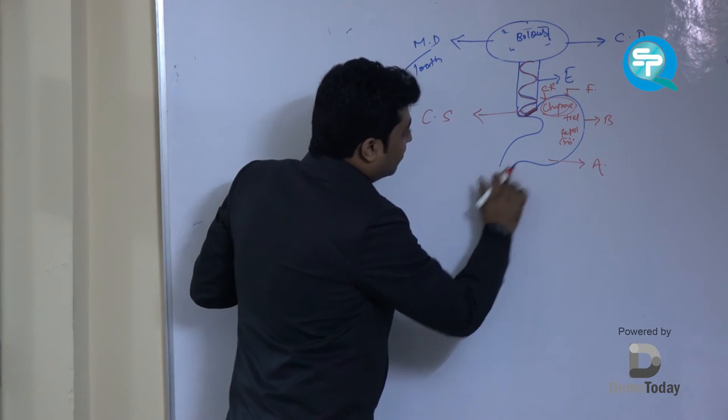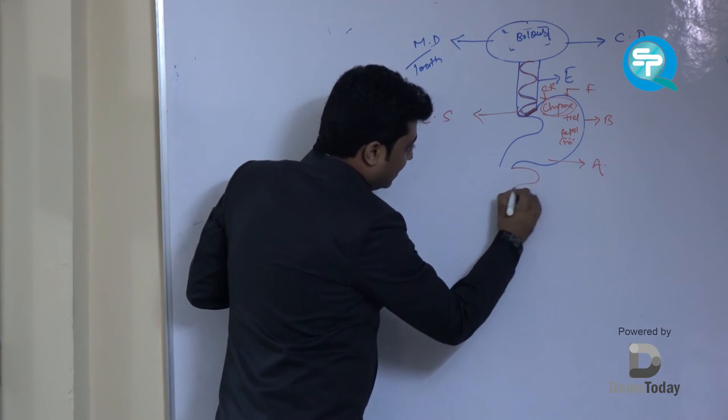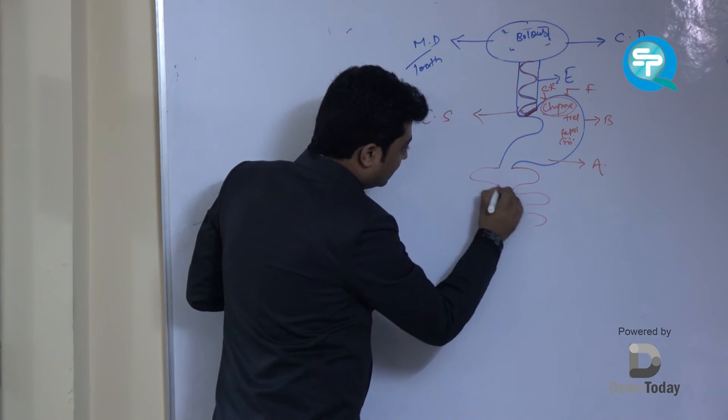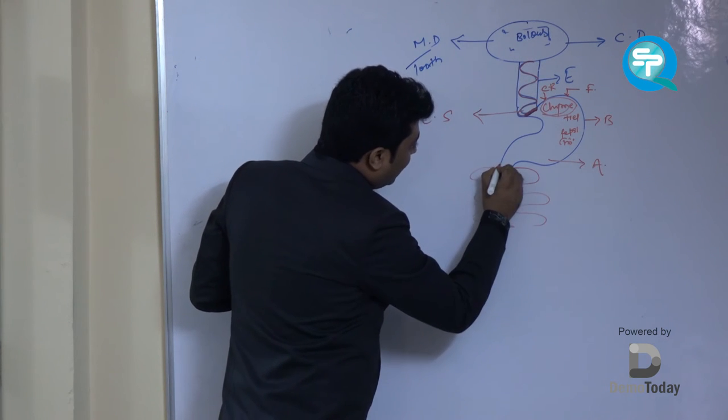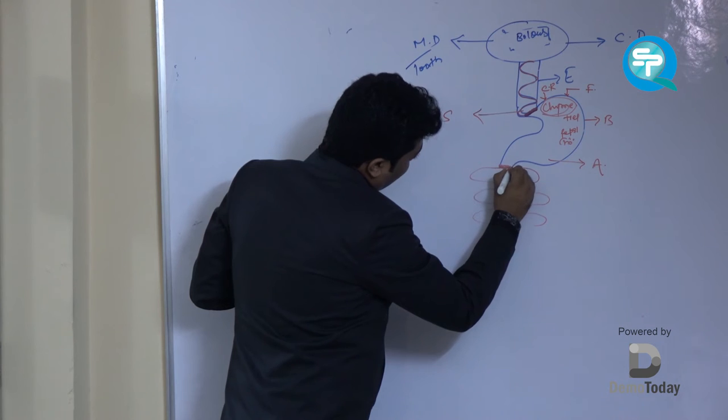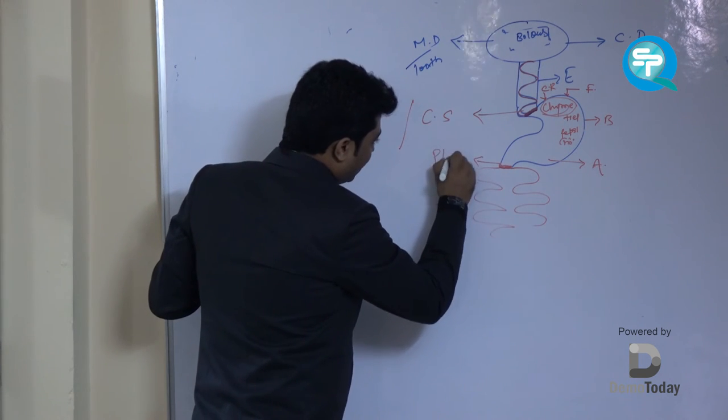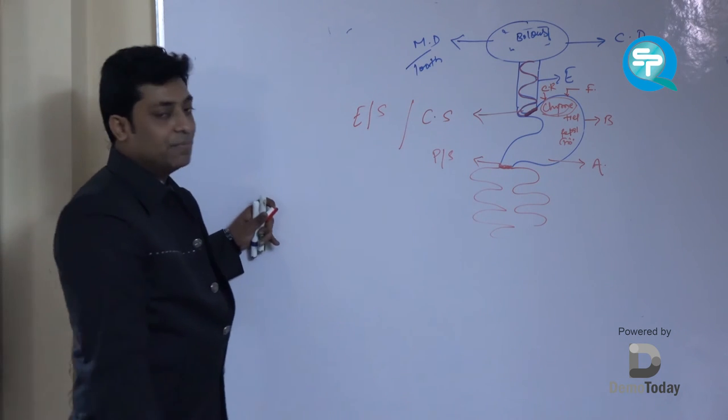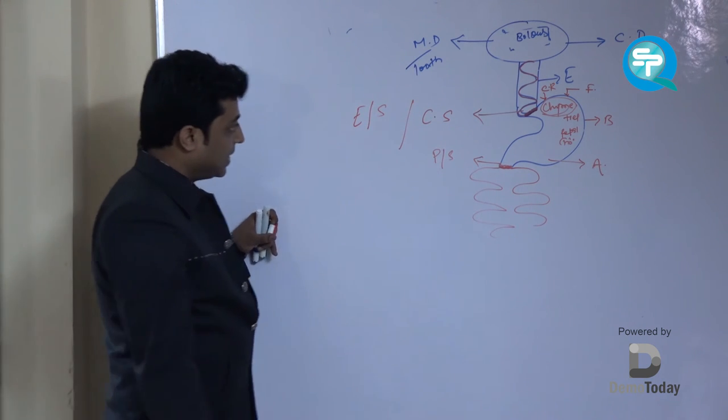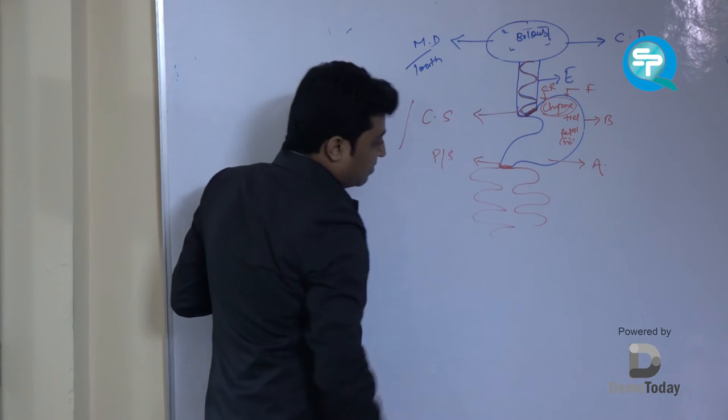Now this chyme needs to move to small intestine for further digestion. Once the chyme moves into the small intestine, here we have another muscular structure. That is known as pyloric sphincter.